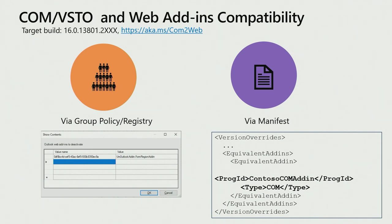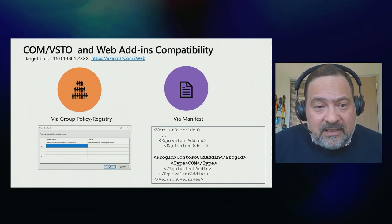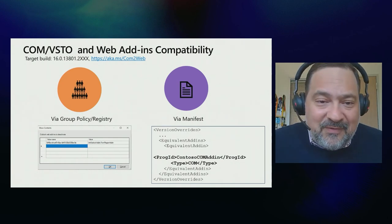Starting on build 16.0.13801, you will find a tool that lets you suppress a web add-in only on the Windows platform and replace it with a COM add-in. If that COM add-in is installed, the web add-in will not be shown. You can accomplish this in two different ways: a group policy or registry entry indicating the ProgID of the COM add-in replacing the web add-in ID, or you can do it through the manifest. This is already supported in Excel, Word, and PowerPoint, and now we're adding support for Outlook via the equivalent add-ins element in the manifest. More information is available at aka.ms/com2web.